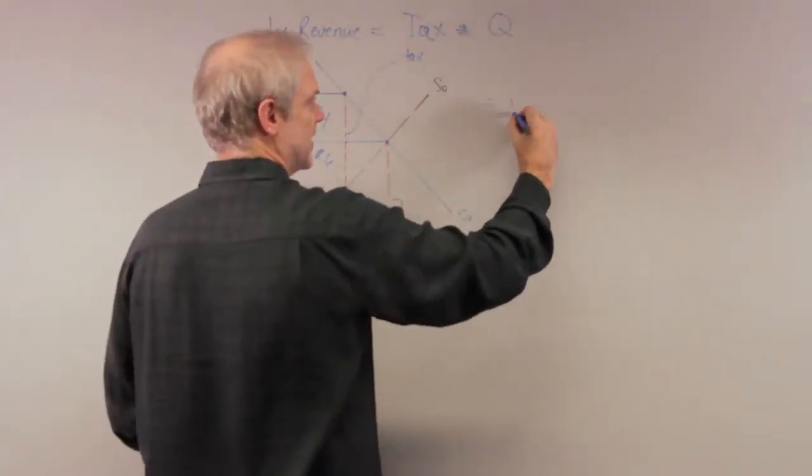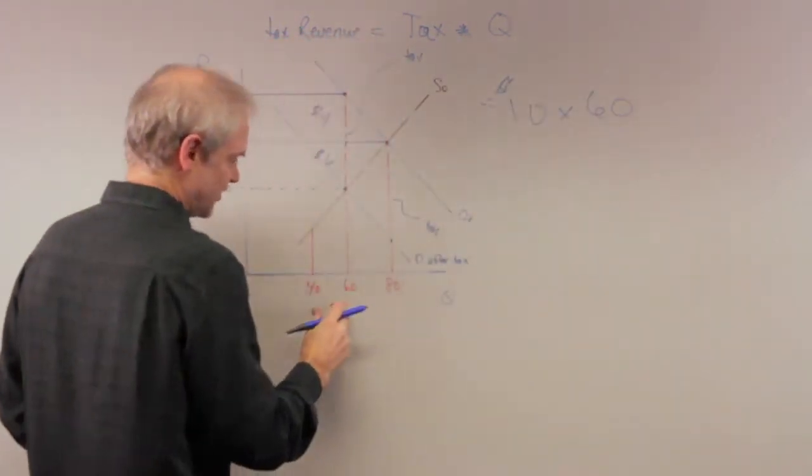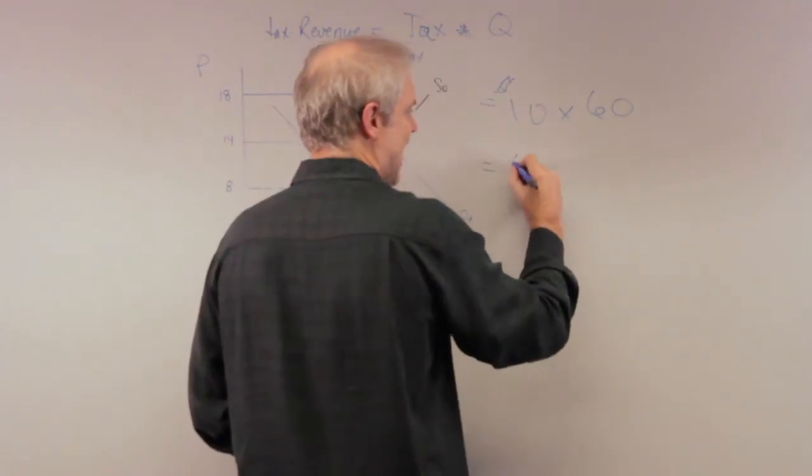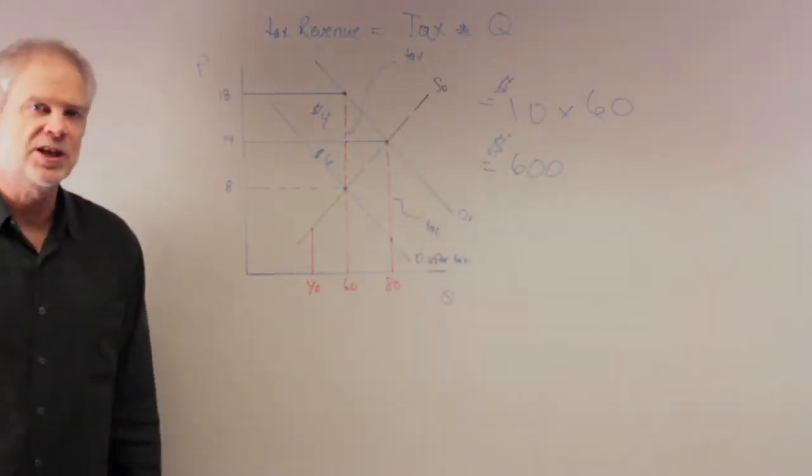In our case, that's going to be $10 tax times 60 units is the new equilibrium right here. So the government tax revenue is going to be $600 in this particular example.